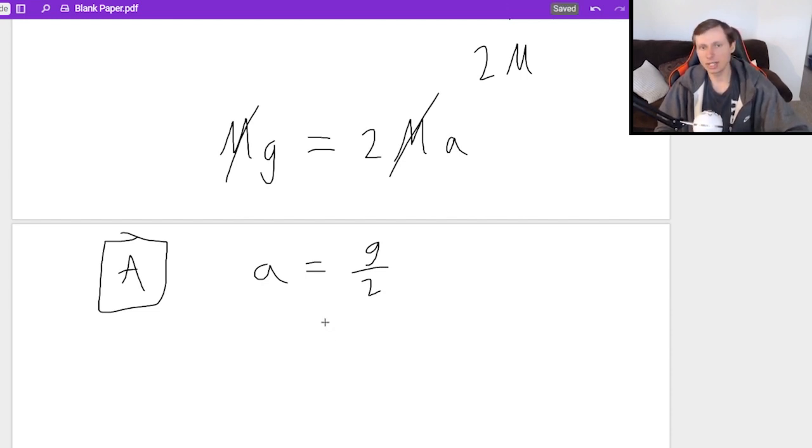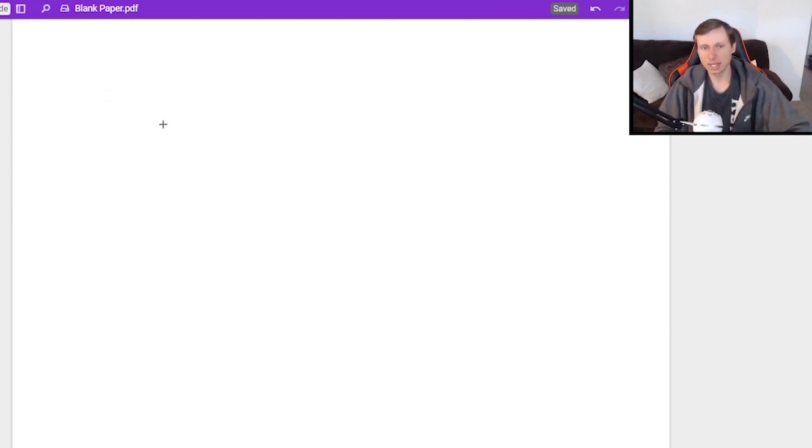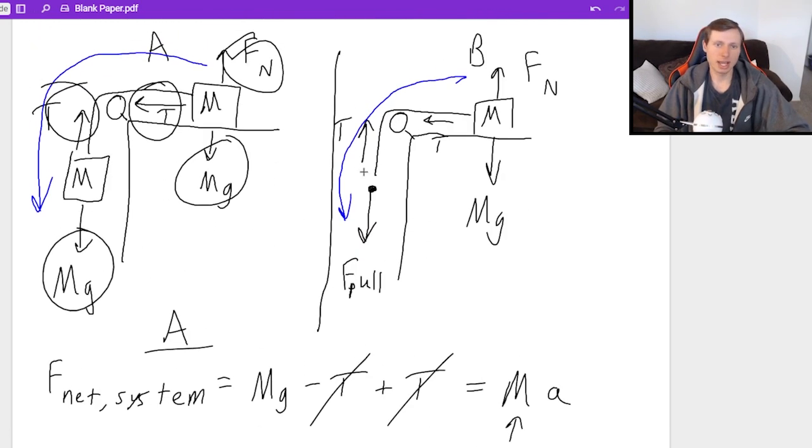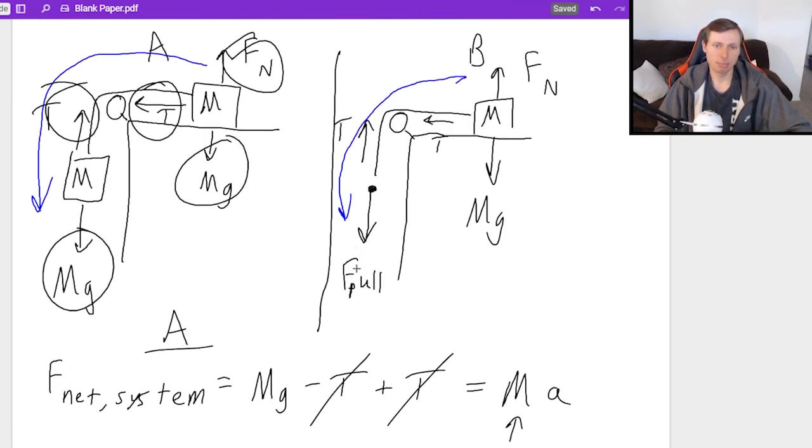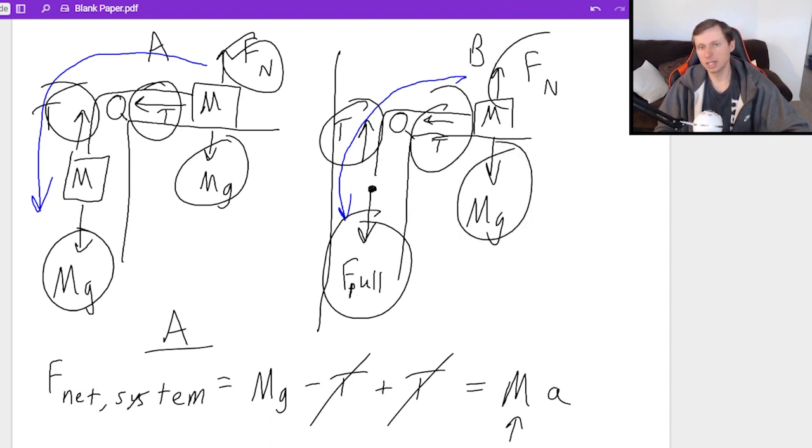Now let's write scenario B in terms of the Newton's second law F net system equation. It starts out looking exactly the same because F pool going down, tension opposite direction, this tension to the left, and then these forces canceling each other out. So I'm going to tell you it's very similar. It's going to be positive F pool, negative T. The positive T will cancel out the other T, just like before. And then this MG and this FN are both zero for this problem.